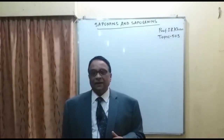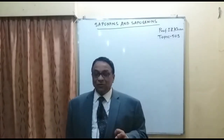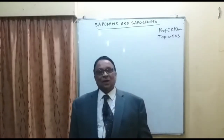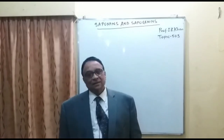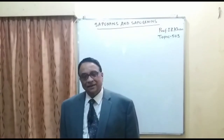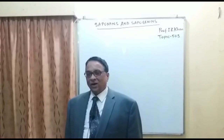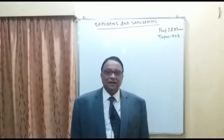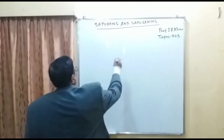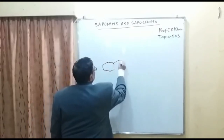Terpenoidal saponins are those saponins which have an isoprene unit in the form of a terpene. In other words, all steroidal saponins are four-ring saponins, and terpenoidal saponins are five-ring. For example, steroidal saponins have a cyclopentanophenanthrene nucleus.